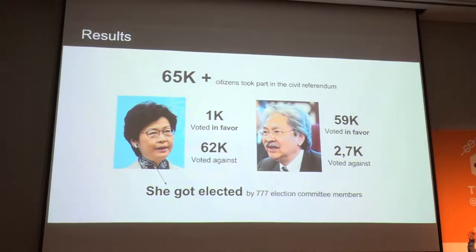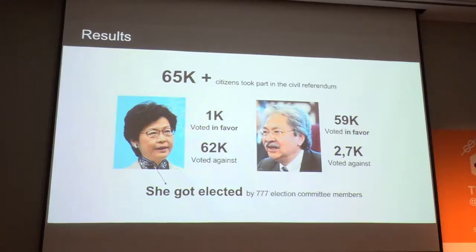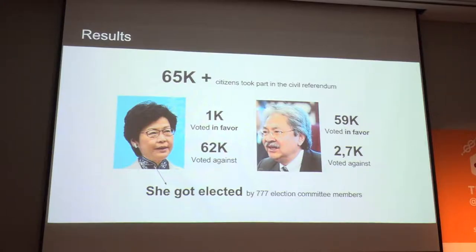Here are the results. The candidate on the right got almost 60,000 votes in favor and 3,000 against. The one who was actually elected got 1,000 in favor and 62,000 against. So PopeVote is about measuring public opinion, and we can see there is no consensual support for these candidates — there is still disrupting to do in Hong Kong.